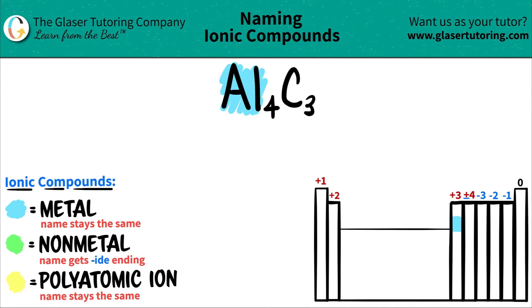Then carbon, which is over here, is to the right of the staircase. That's going to be a nonmetal. Anything to the right of the staircase is a nonmetal, and carbon is always a nonmetal.